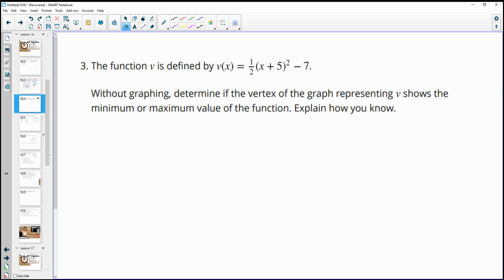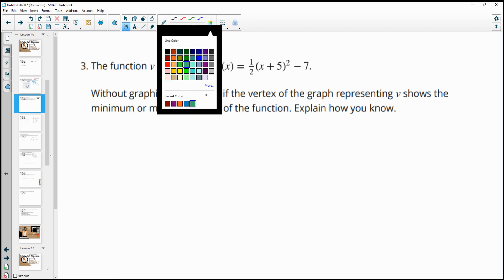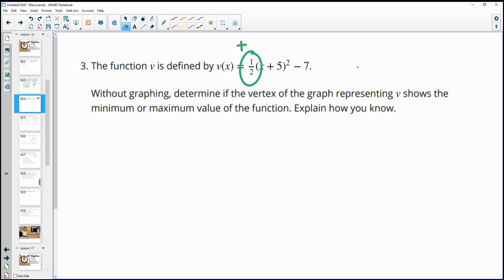Number three, the function v is defined by this. Without graphing, determine the vertex of the graph representing v and whether it shows a minimum or a maximum. OK? So determine if the vertex of the graph is a minimum or a maximum. And this has to do with this value. So this is positive, meaning that your graph is going to open upward, which means your vertex is down here, and that means that it's a minimum.